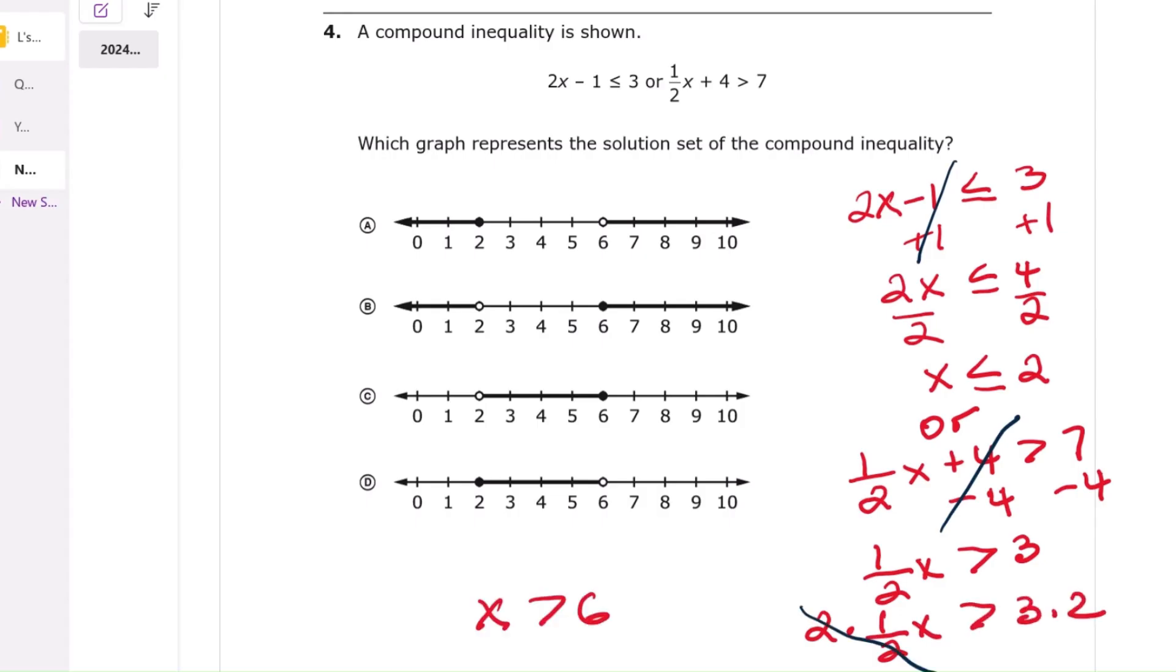On the number line, we place an open circle at 6, and the arrow goes to the right, and place a closed circle at 2, and the arrow goes to the left. The correct graph is A.